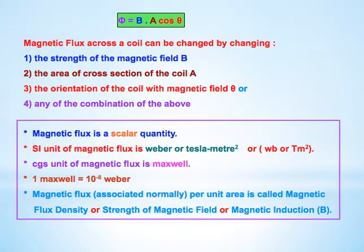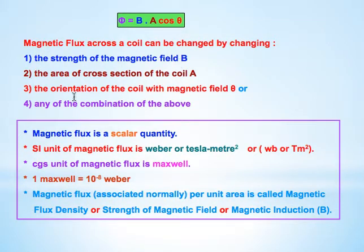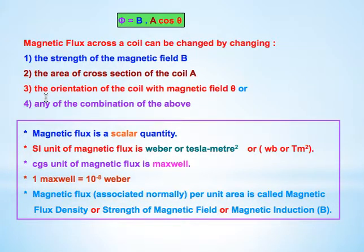Now, magnetic flux through a coil can be changed. How can we change the magnetic flux? Magnetic flux depends on: first, the strength of the magnetic field — if magnetic field strength is more, magnetic flux will be more; second, if the area of cross-section of the coil is more, more magnetic lines will pass through it; and third, the orientation of the coil with the magnetic field, meaning what angle theta the coil makes with the magnetic field. Any combination of the above factors will also change the magnetic flux.